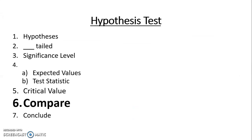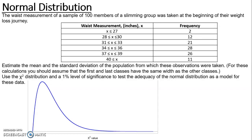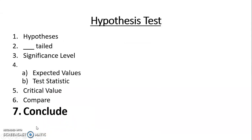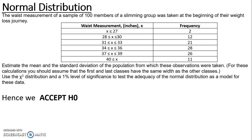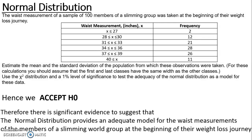Step six is to compare the test statistic with the critical value. On the chi-square distribution, placing the critical value of 9.210, my test statistic of 1.3461 lies in the large central region of the distribution — the big fat belly. The rule is that we accept H0 in the belly. In context, there is significant evidence to suggest that the normal distribution provides an adequate model for the waist measurements of the members of the slimming group at the beginning of their weight loss journey.